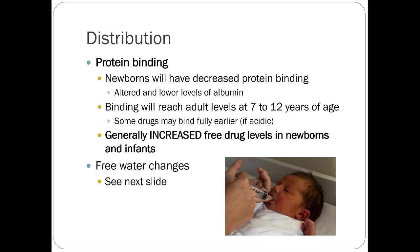Protein binding: newborns have decreased protein binding and altered, lower levels of albumin. Most of the time this doesn't matter for your general kid, but for kids with specialized diseases like epilepsy it might — many anti-epileptic drugs are highly albumin-bound, so you might see higher free levels. Dosing for pediatrics takes these things into consideration, so it's not just simply weight. Most medicines used in peds have dosing recommendations, so you really just need to know how to use a drug monograph.